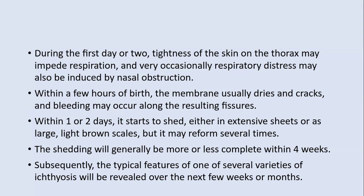Within a few hours of birth, the membranes start drying and cracking, and bleeding occurs as a result of fissuring. In another one to two days, it starts to shed, and extensive sheets of large brown scales are shed. In addition to shedding, new membrane is also formed. Shedding is more or less complete by the end of four weeks, after which the typical features of one of several types of ichthyosis become apparent in the next few weeks or months.